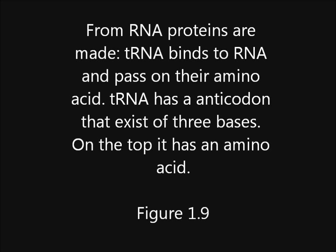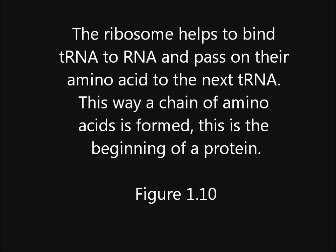From RNA, proteins are made. tRNA binds to RNA and passes on its amino acid. tRNA has an anticodon that consists of three bases, and on the top it has an amino acid. The ribosome helps to bind tRNA to RNA and pass on their amino acid to the next tRNA.